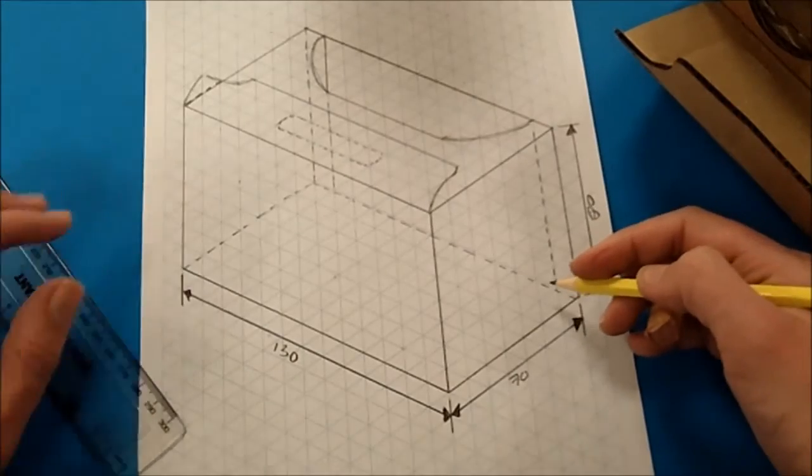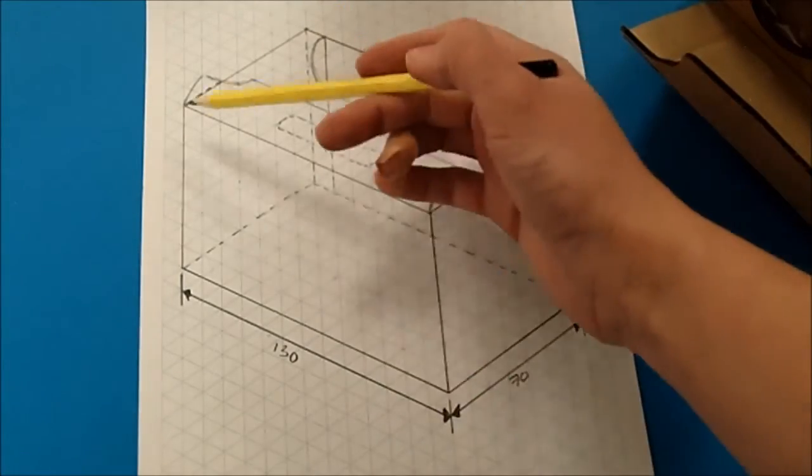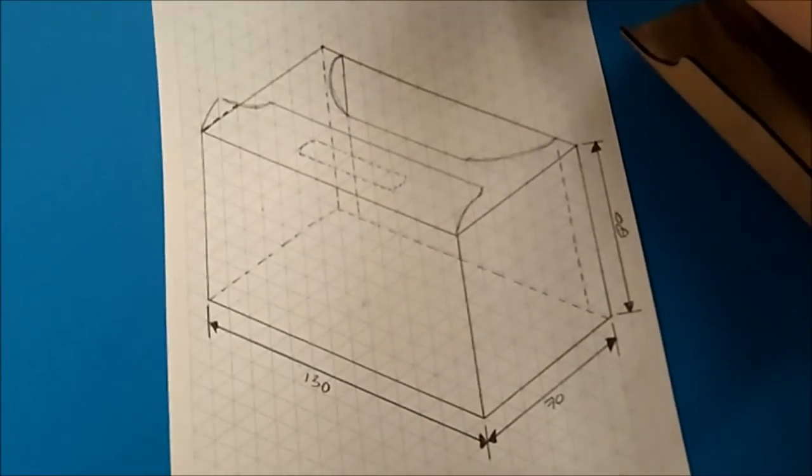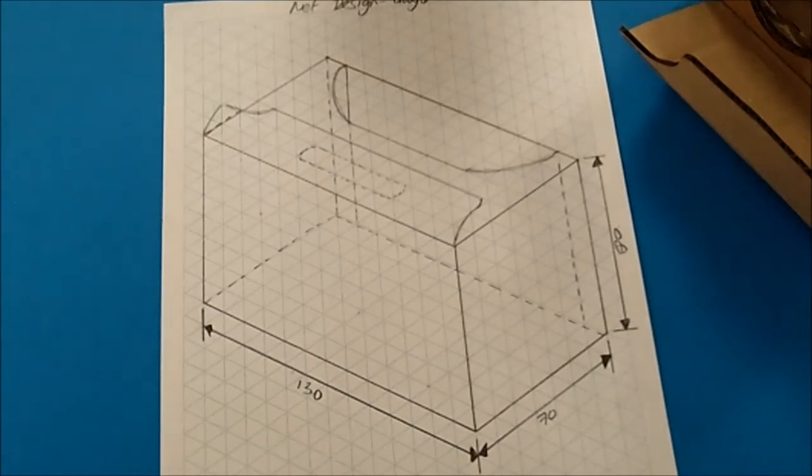So that now concludes our dimensioning, our lines, and our hidden lines. In the next tutorial I'm going to talk to you a little bit more about labeling some of the features and completing a bill of materials.